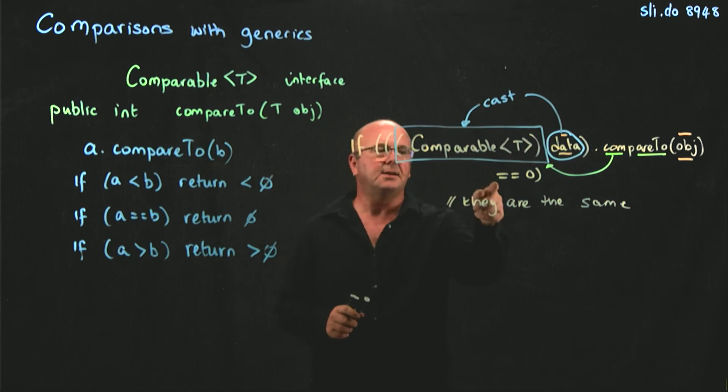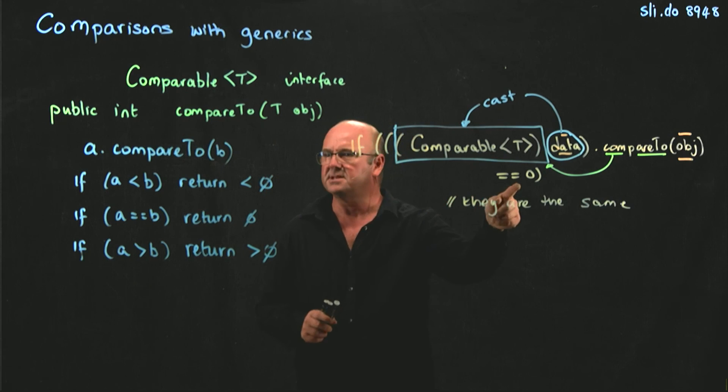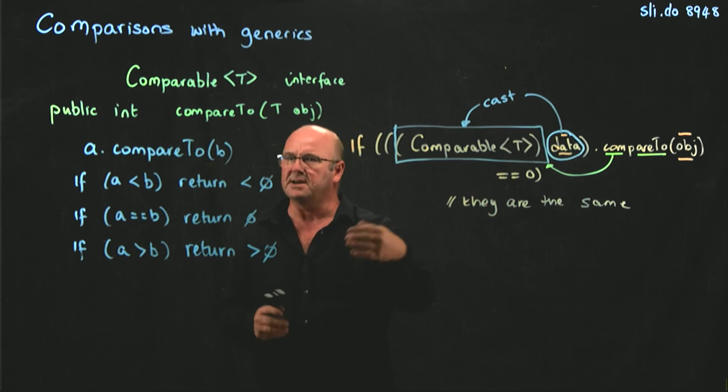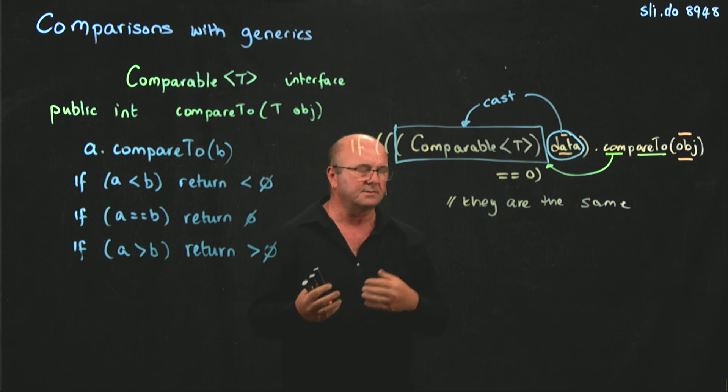And if they're the same, it returns zero. If one's greater than the other, it will return greater than one, or greater than zero, and if one's less than the other, it will return less than zero.